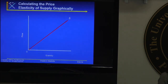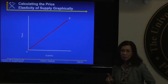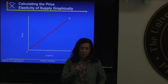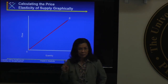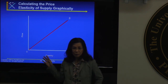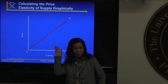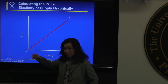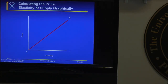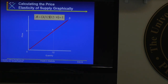Let's calculate price elasticity of supply at point A on a supply curve that passes through the origin. At point A, price is $4 and quantity is 12. The slope is the vertical change over horizontal change — that's 4 over 12, or one-third. The reciprocal of the slope is 3. Then P over Q is 4 over 12, which is one-third. Multiplying: 3 times one-third equals 1.